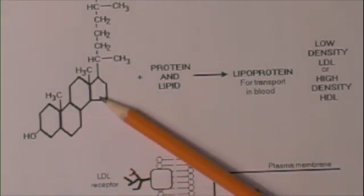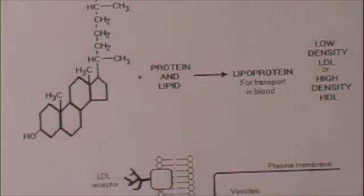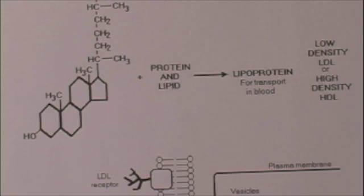Here's the basic four ring structure with a lot of side groups attached to it. We hear a lot about how bad cholesterol is, but you have to have it. It's used in making membrane structures and in manufacturing various hormones, so it's necessary.